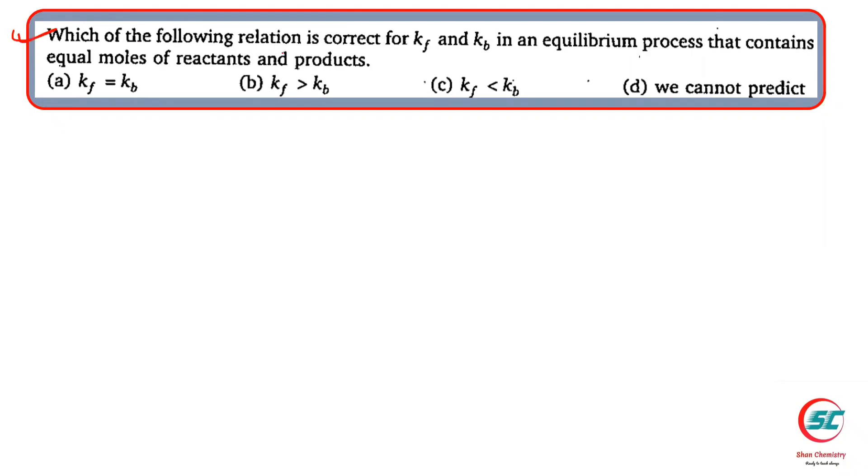Hello students, here is the question: which of the following relation is correct for k forward and k backward in an equilibrium process that contains equal moles of reactants and products?